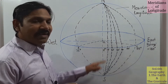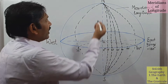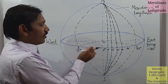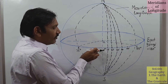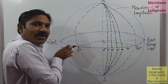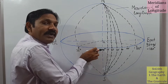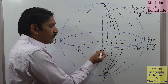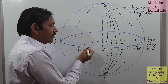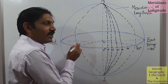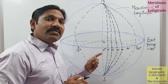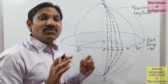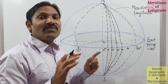In the same way, we can draw on the west side also, after a particular interval of degrees — 0, then 10, 20, 30, 40, 50, like this. These semicircles help us to identify the actual location on the surface of the earth. So these are meridians of longitude.